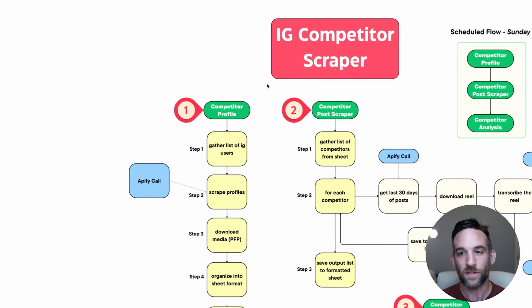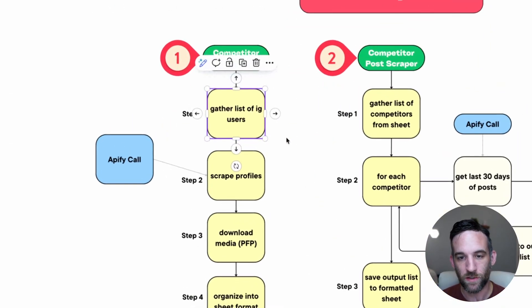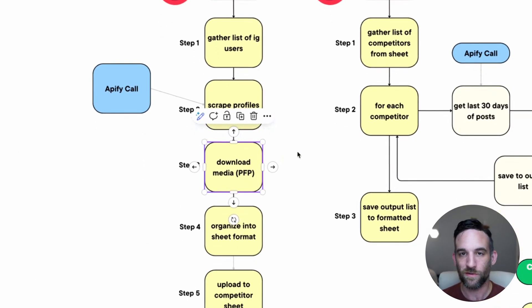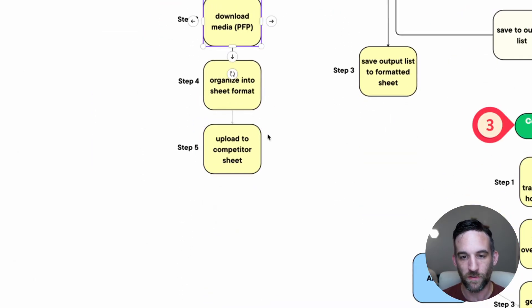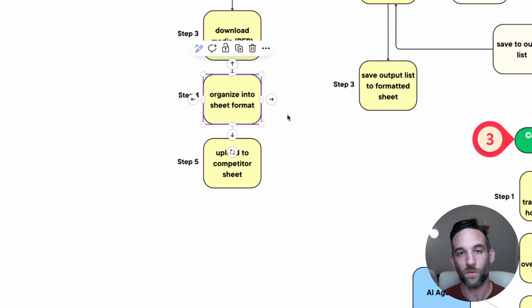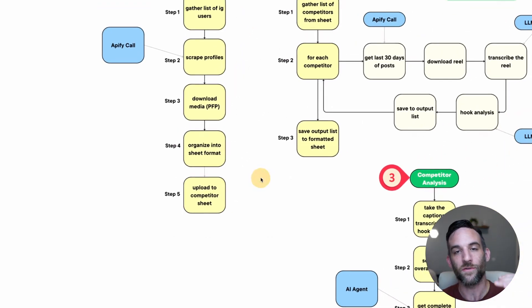Let me explain to you how it works. This is an Instagram competitor scraper. The first thing it does is it gathers a list of Instagram users, I scrape their profiles using Apify, and then download the profile pictures, organize everything into a format as well as a lot of other information, and then upload that to a sheet inside of a spreadsheet.